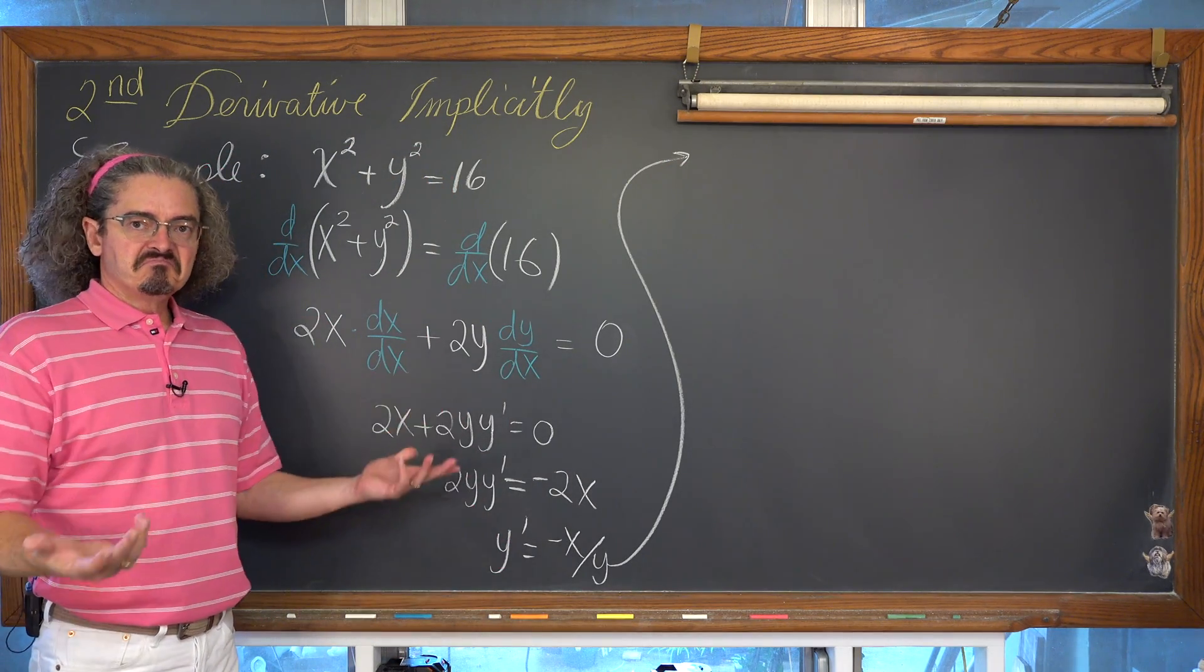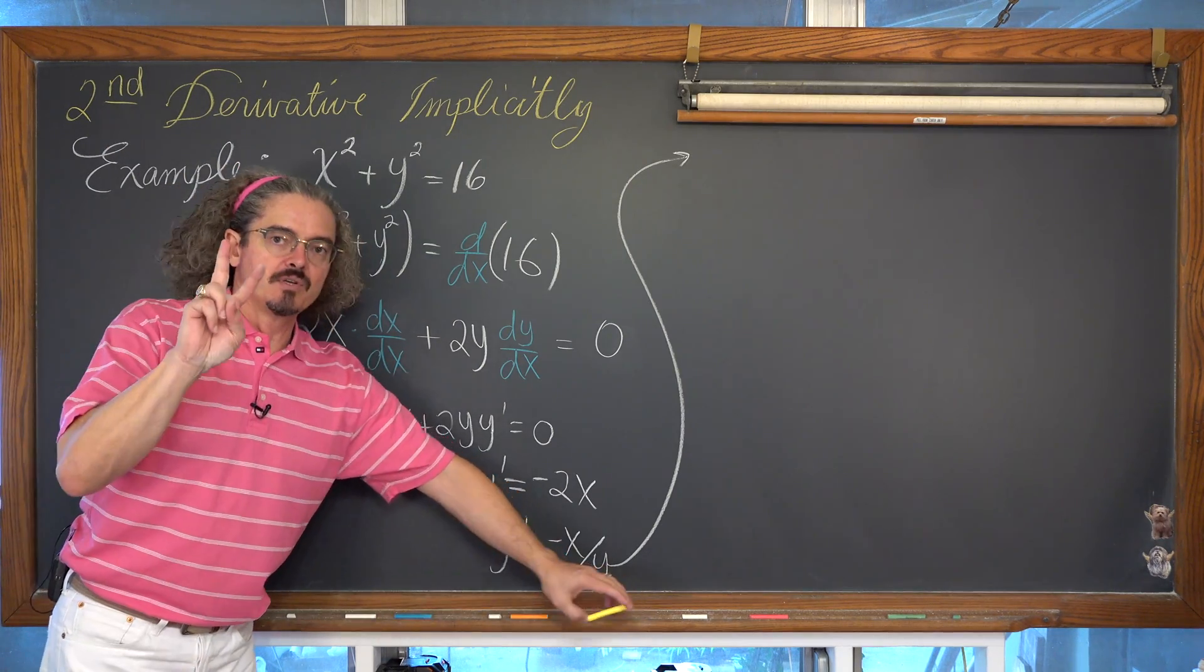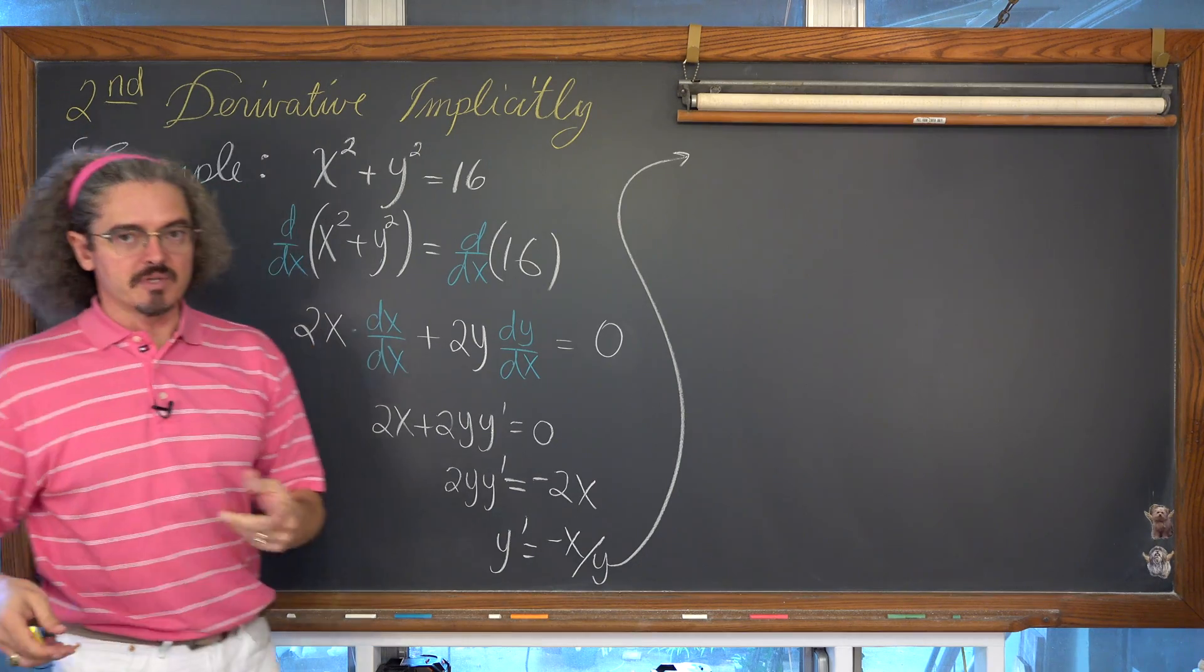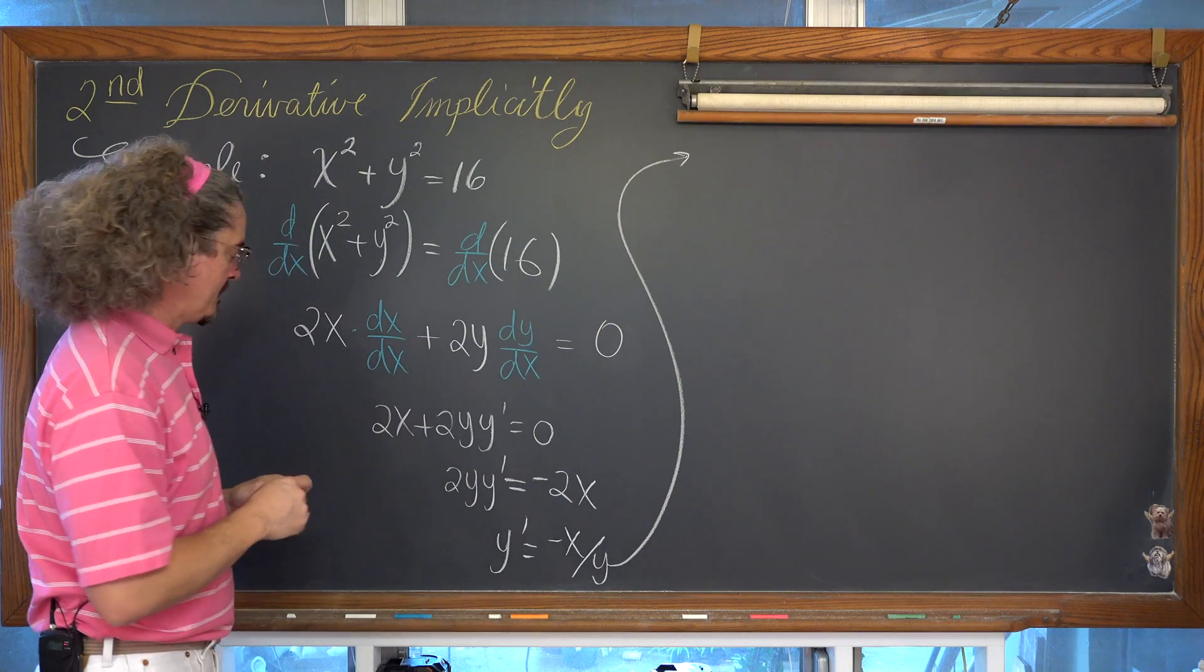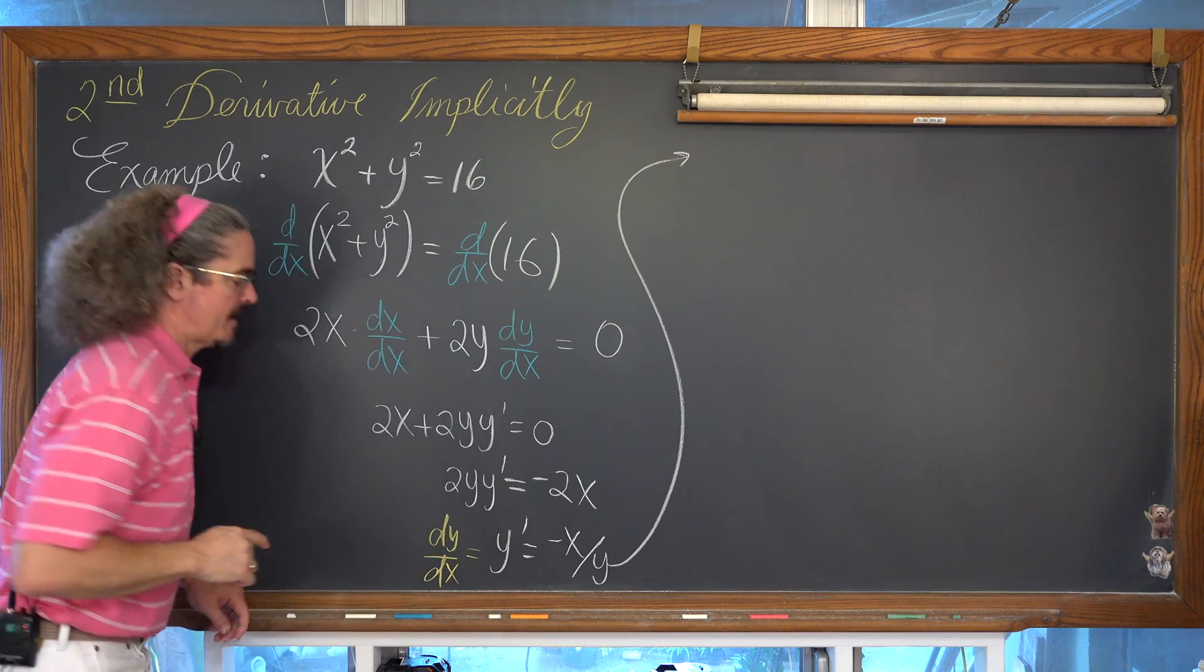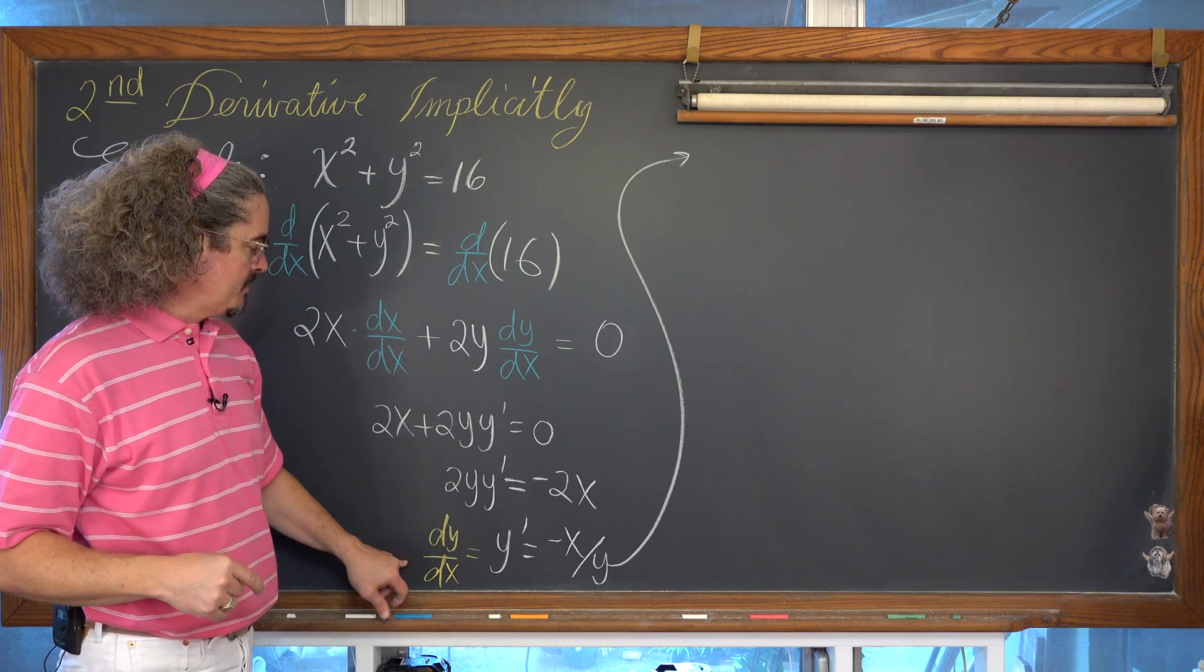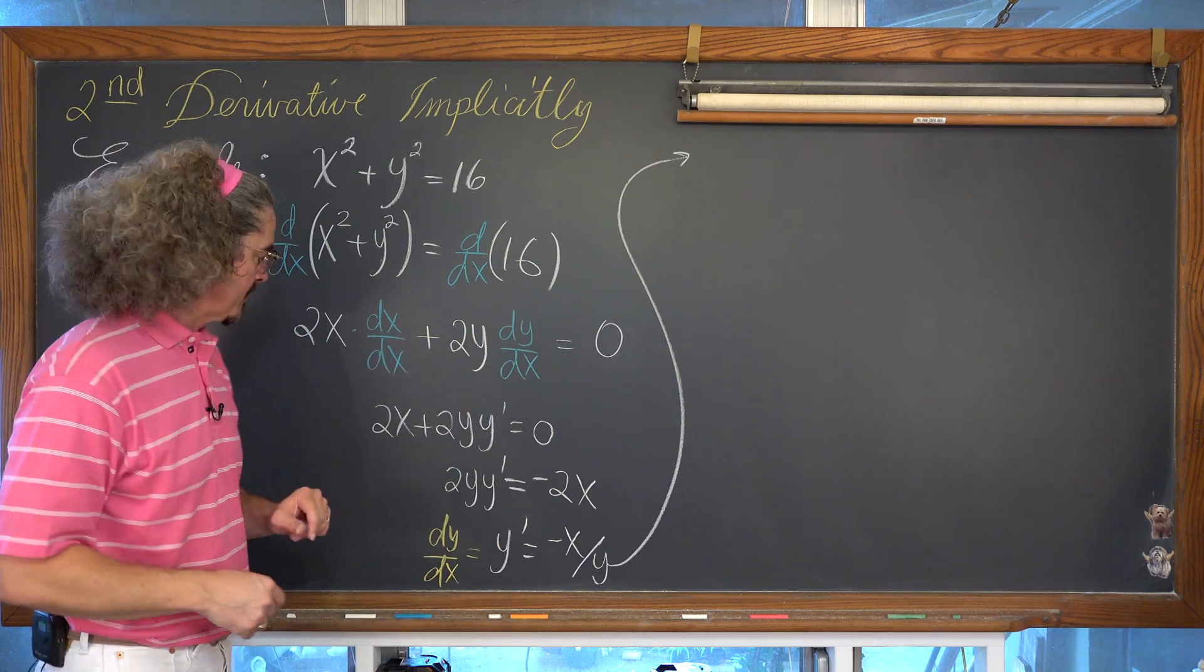That's step one. And nothing maybe necessarily very interesting there. Step two, we are asked to find a second derivative implicitly. So I'm going to shift back to the derivative of y with respect to x. And we're going to use that notation, dy over dx instead of y prime for our second derivative.